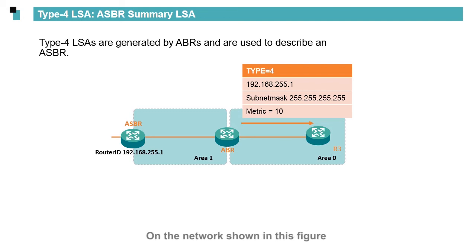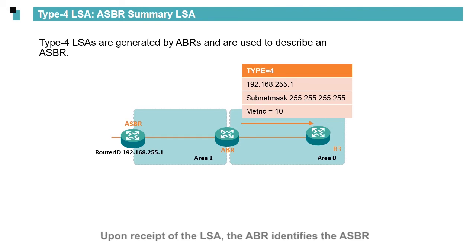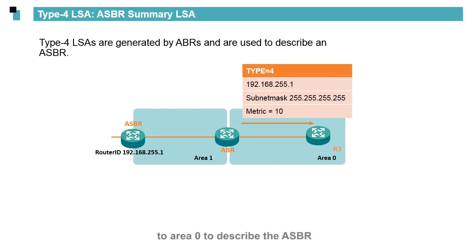Type 4 LSAs describe an ASBR. On the network shown in this figure, the ABR and ASBR are both located in Area 1. The ASBR imports external routes to Area 1 and floods a Type 1 LSA in which the E bit is set to 1. Upon receipt of the LSAs, the ABR identifies the ASBR. However, R3 is located in another area and cannot identify the ASBR through Type 1 or Type 2 LSAs. In this case, the ABR needs to flood an ASBR Summary LSA to Area 0 to describe the ASBR.